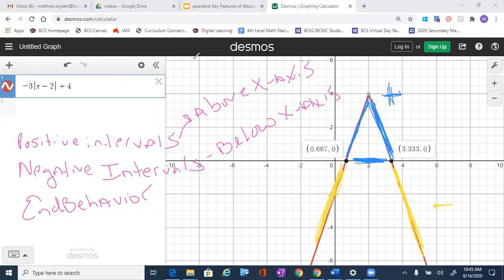that is my, from here to here is my positive. So I'm going to say, let's do this. Let's go 0.667 to 3.33.